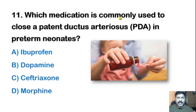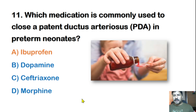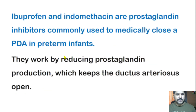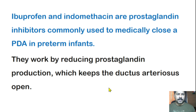Eleventh question: Which medication is commonly used to close a patent ductus arteriosus (PDA) in preterm neonates? Options: ibuprofen, dopamine, ceftriaxone, or morphine. The correct answer is ibuprofen. Ibuprofen and indomethacin are prostaglandin inhibitors commonly used to medically close a PDA in preterm infants. They work by reducing prostaglandin production, which is what keeps the ductus arteriosus open.